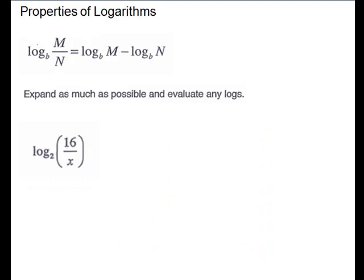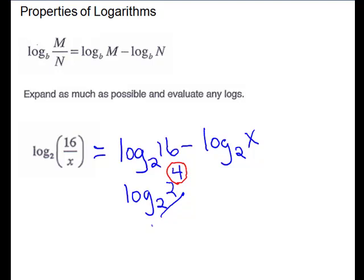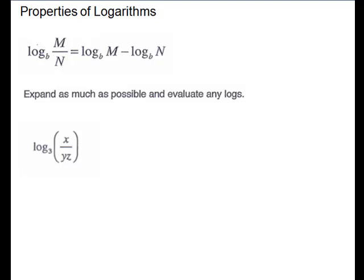Next we have log base 2 of 16 over x. It is the log of a quotient, so we rewrite it as the difference of the logs: log base 2 of 16 minus log base 2 of x. We can rewrite 16 as 2 to the fourth, using this same base, and then simplify — the answer is the exponent 4. There is nothing you can do to the other piece.